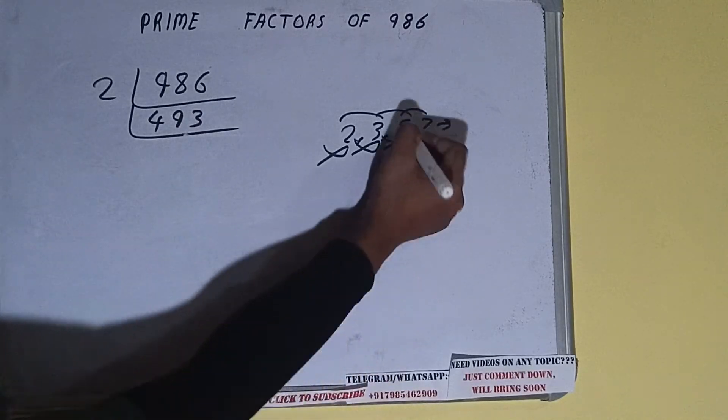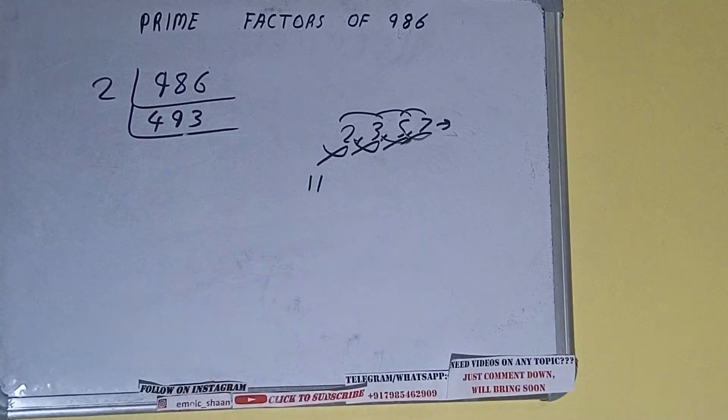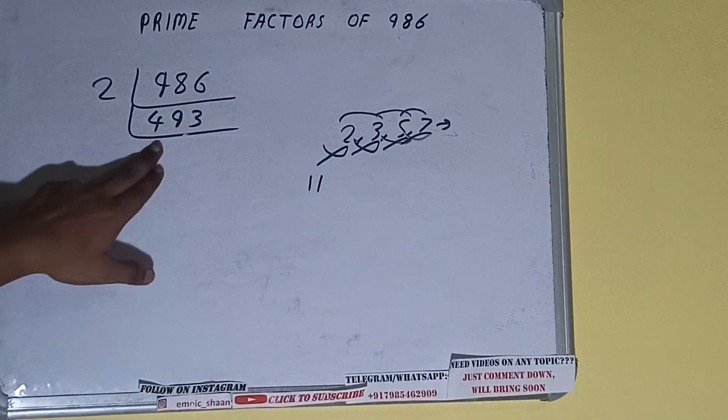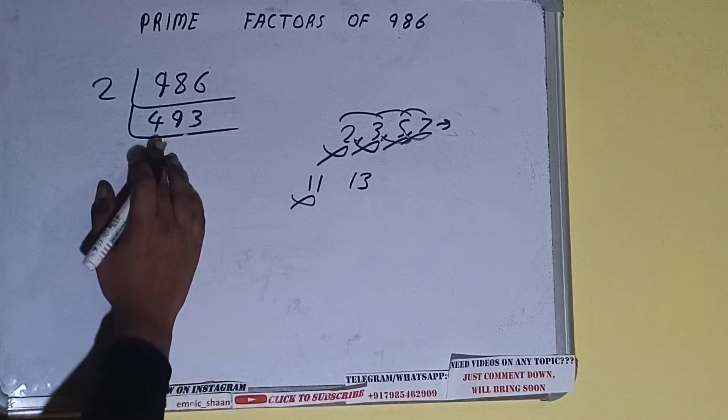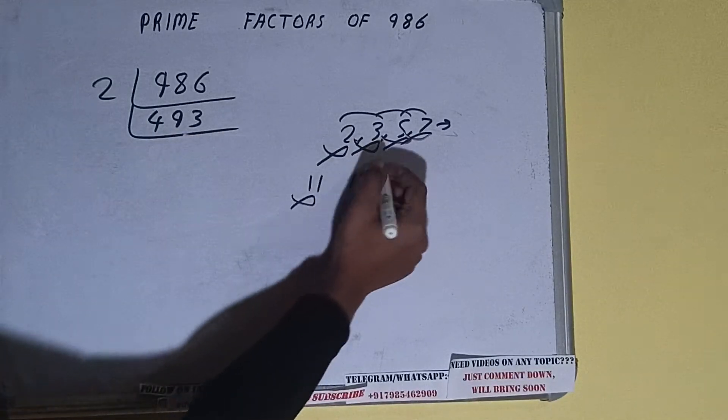Let's check with thirteen. Thirteen threes are thirty-nine, one zero three, one five three...